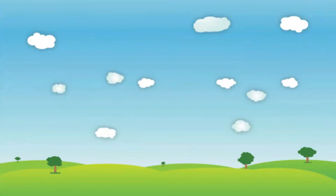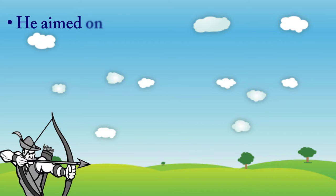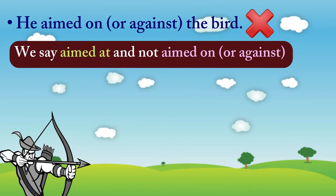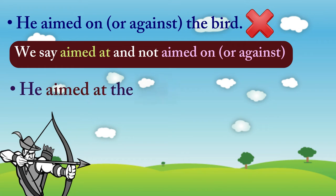The next one is: 'He aimed on or against the bird.' This is an incorrect sentence. Please note we say 'aimed at' and not 'aimed on' or 'against.' Please repeat the correct sentence after me: He aimed at the bird.